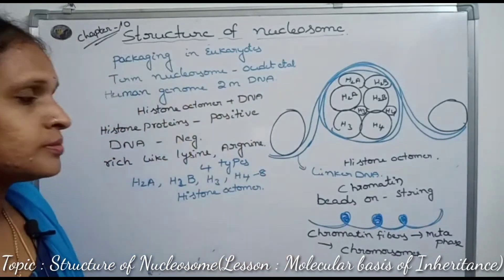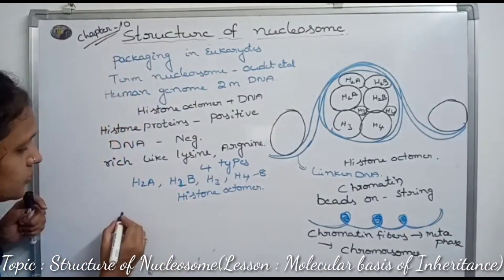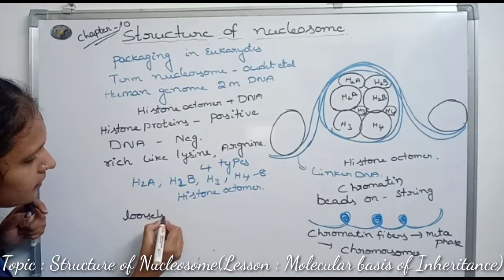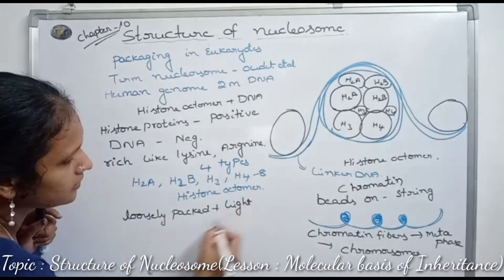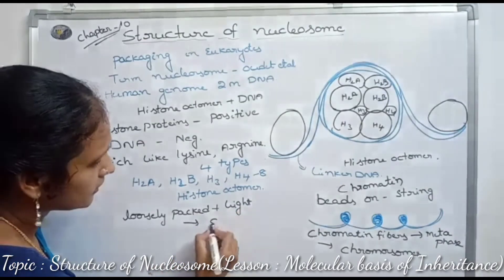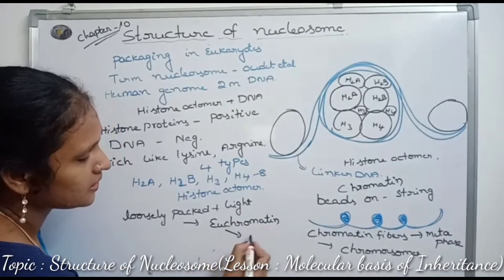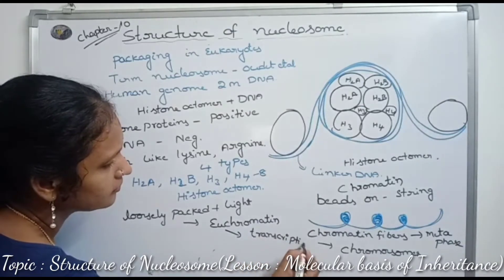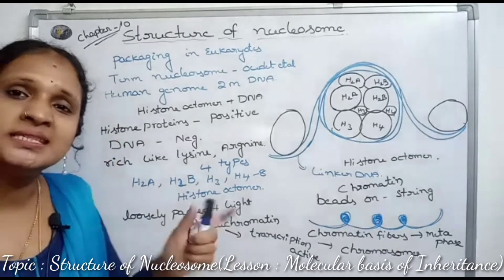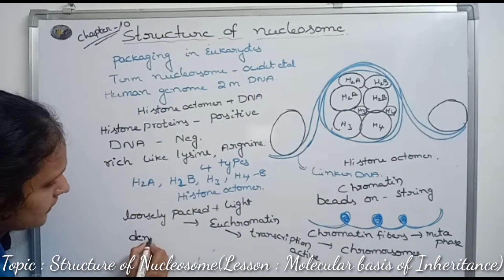Some regions of chromosomes are loosely packed and light stained — this is called euchromatin. Euchromatin is transcriptionally active.